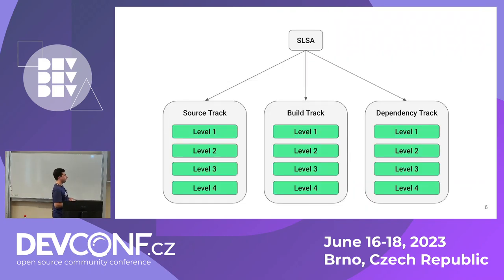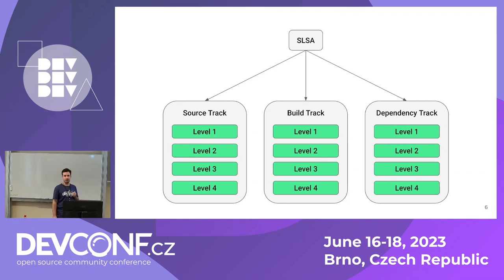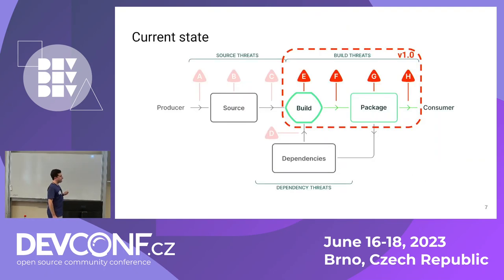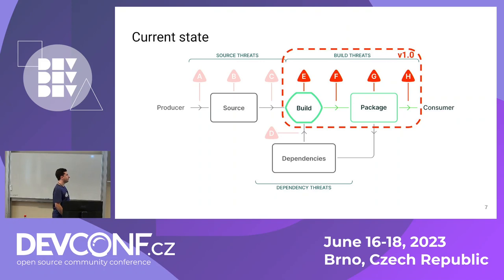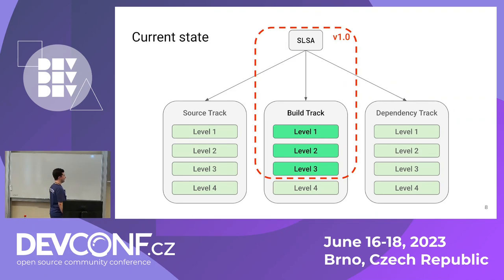SLSA is divided into three tracks — one for each kind of threat: source track, build track, and dependency track. Each track has four levels of certification. The current state: SLSA version 1.0 was just released on April 18th this year. It's early stage, and it only covers the build track — and for the build track, we only cover up to level three. Level four is probably coming very soon, but creating a specification of this kind is not easy.